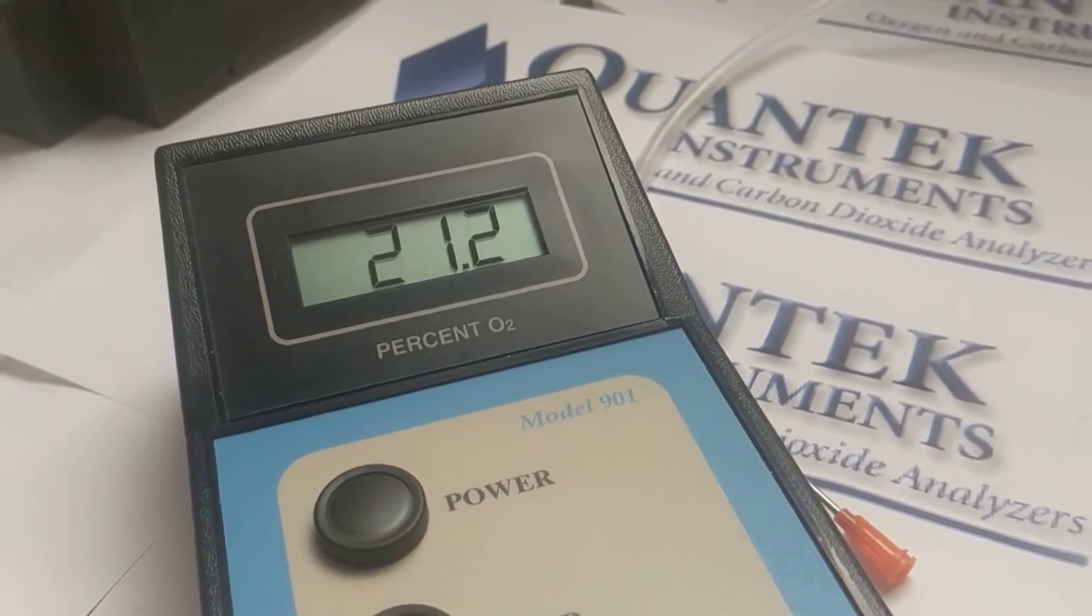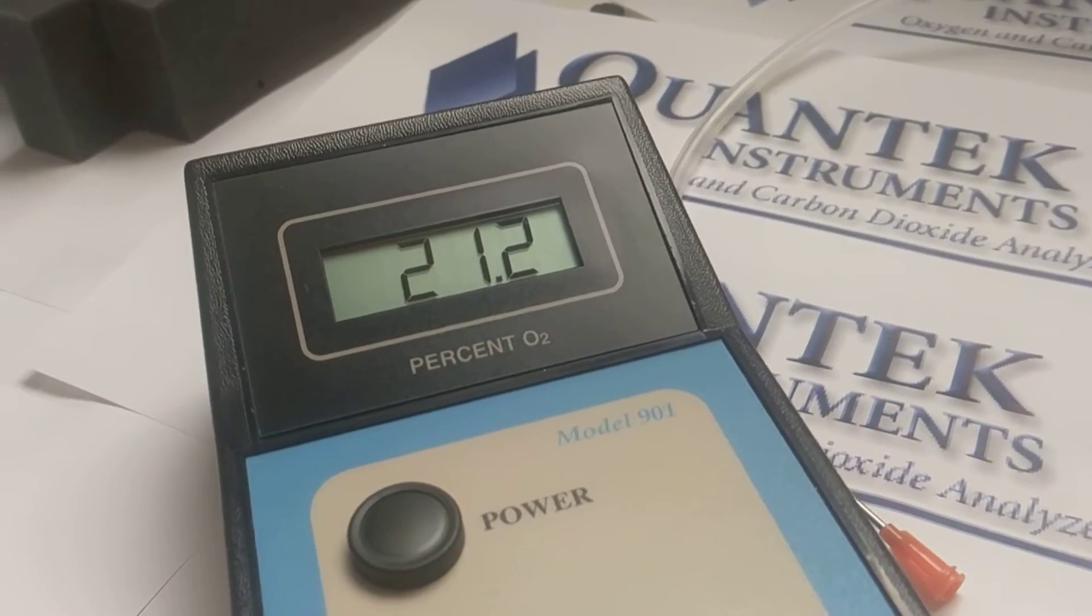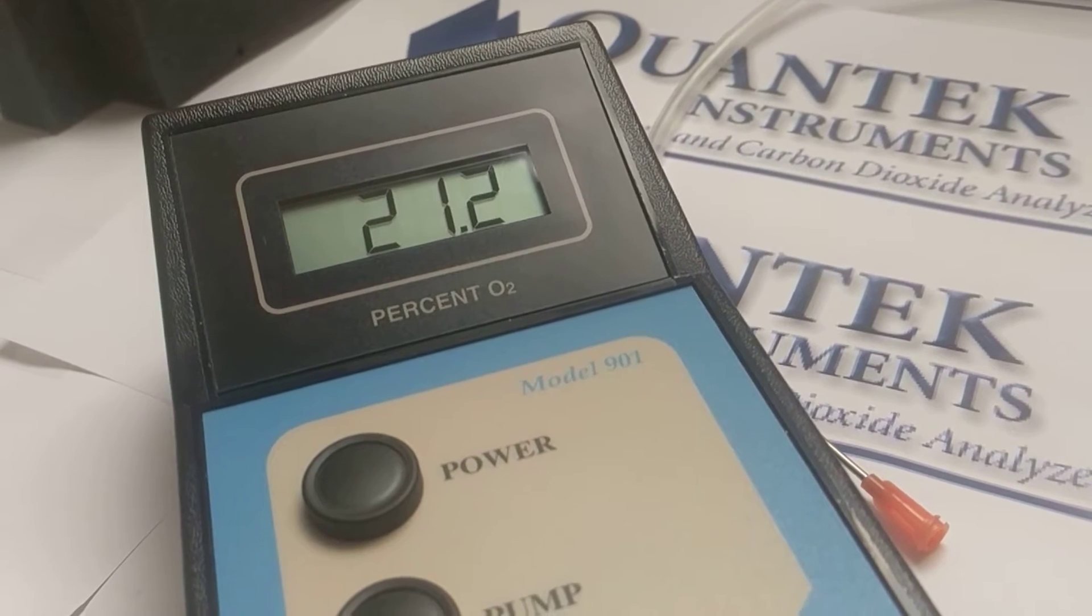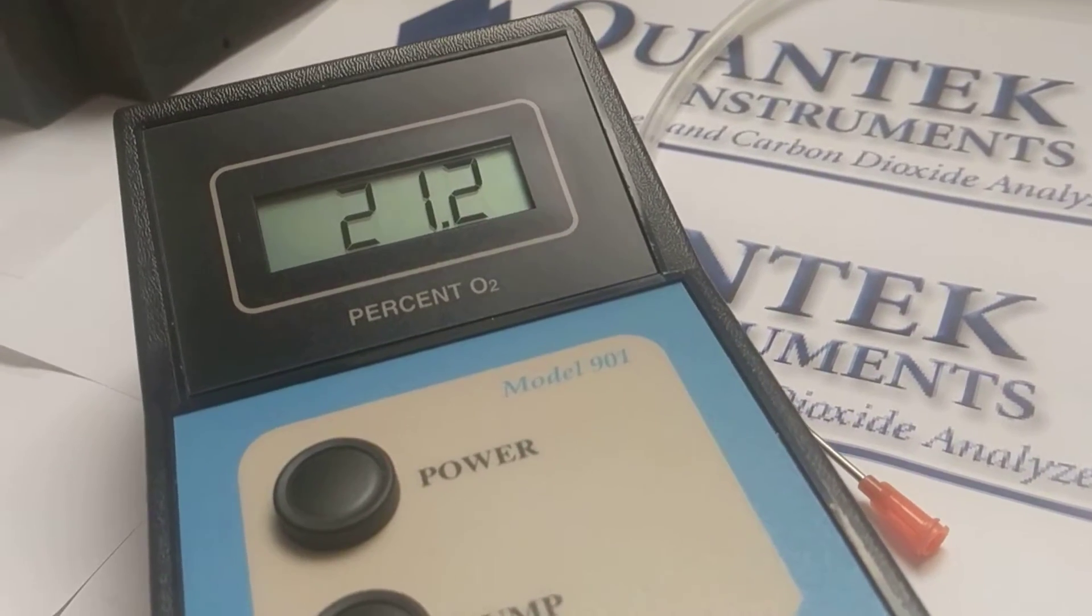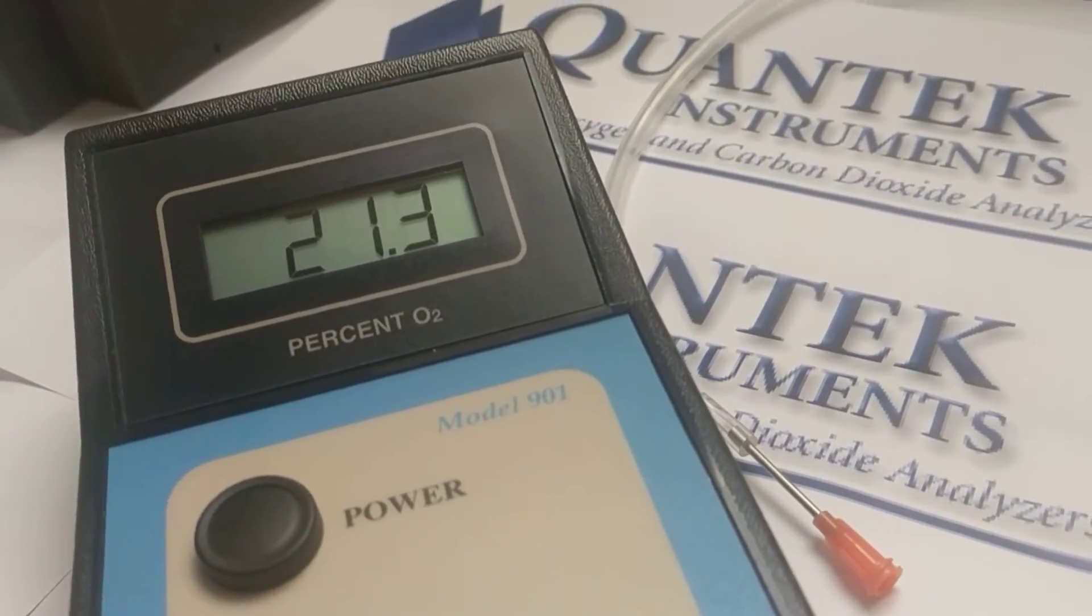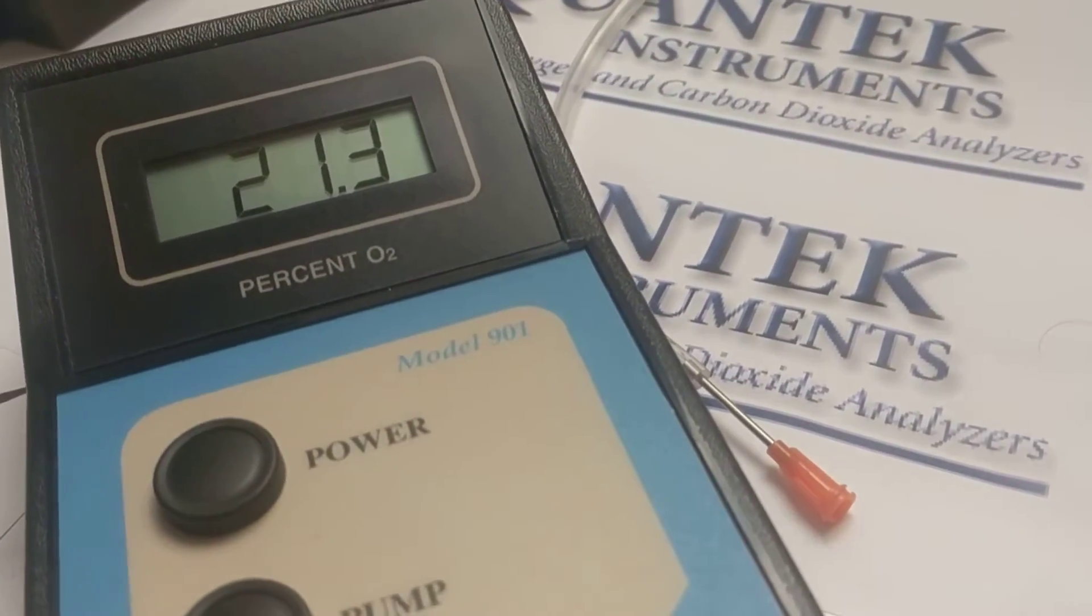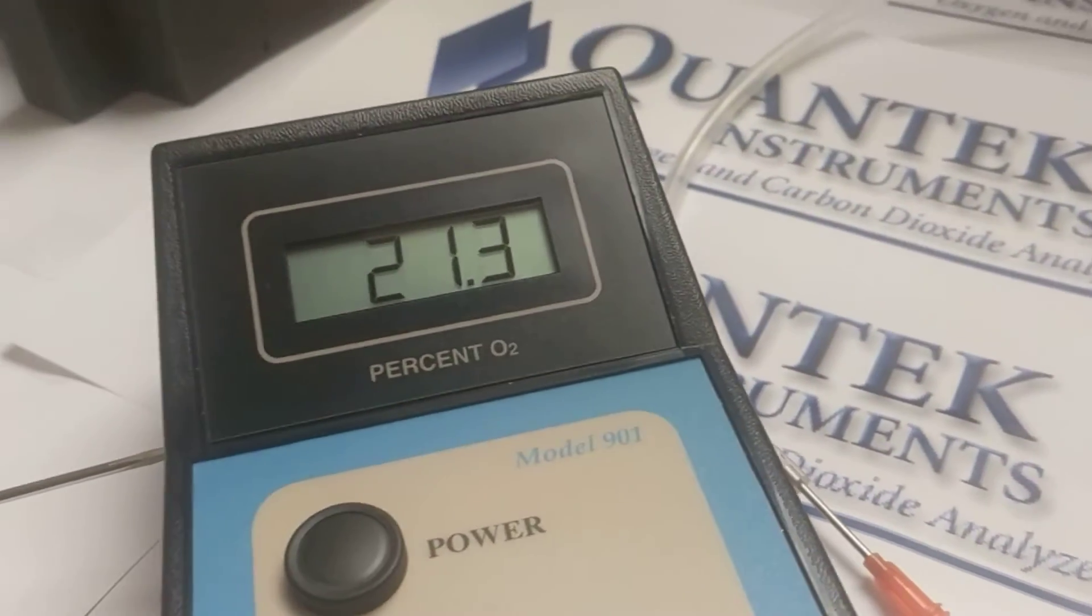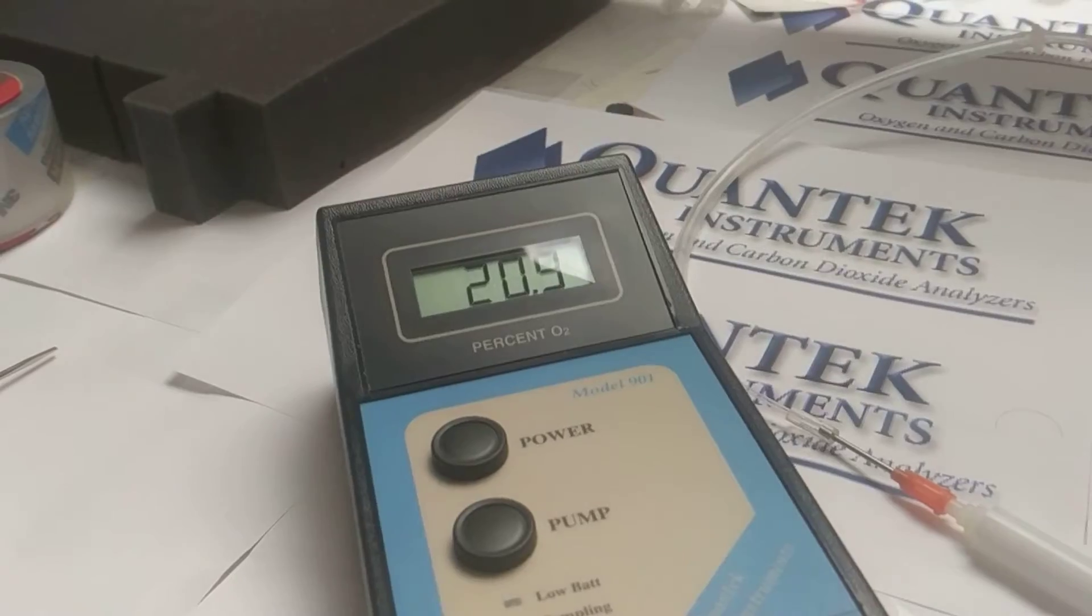We're often asked, how often should we check the O2 span? We have some customers that check it at the beginning of every day or every shift. We have some customers that check it once a month. Certainly you should make this adjustment if you change elevation, but it's really not necessary to do more than say once a month. Changes, large changes in temperature or humidity might throw this number off by about 0.1, which is statistically insignificant, especially when sampling a low level of oxygen. So now we're going to turn the span counterclockwise and adjust it back down to 20.9%.